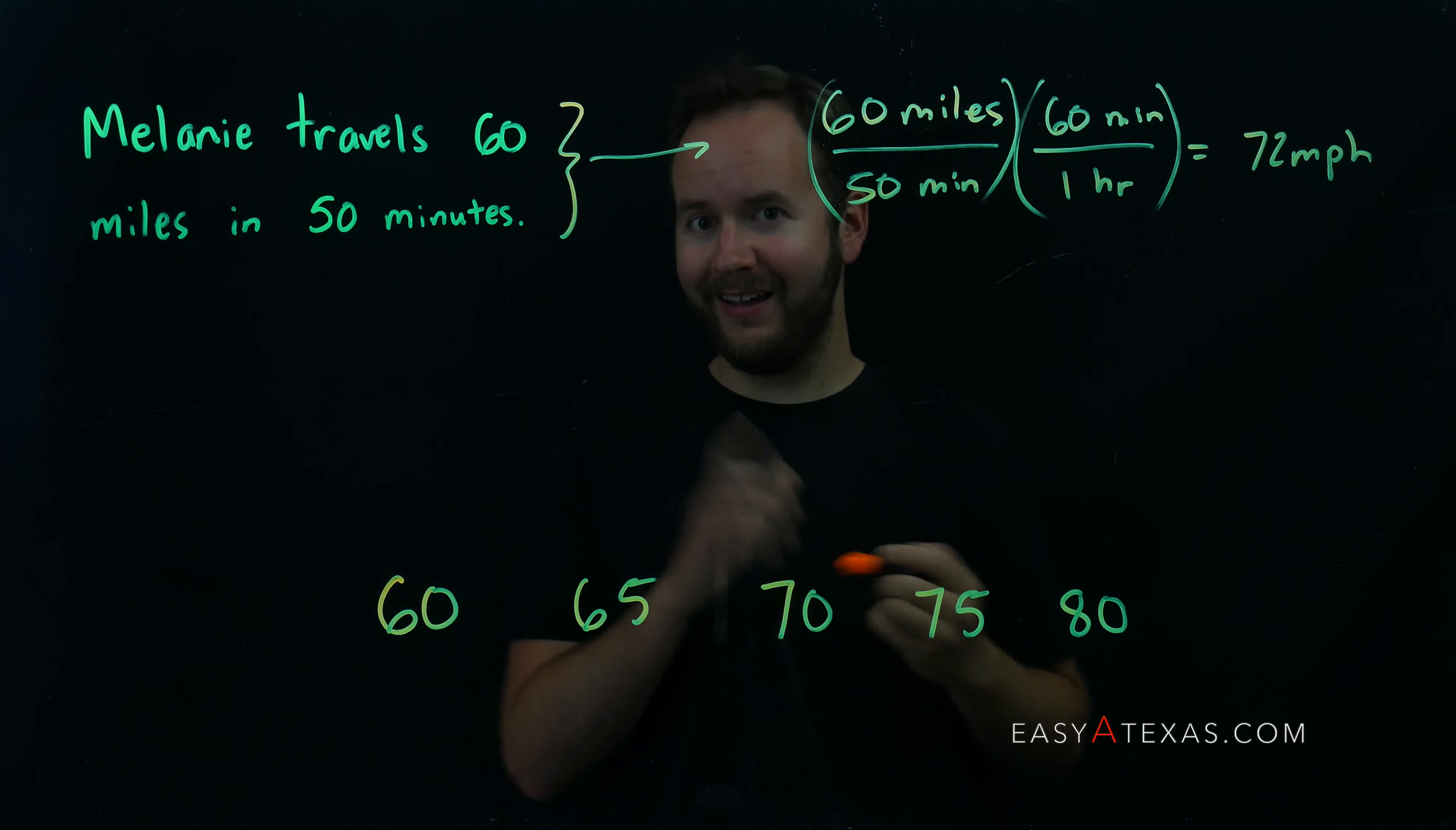And the question is, what's the highest speed limit we can post and still catch her speeding? So with that in mind, if the speed limit were 80, would she be speeding? No, because 72 miles per hour is clearly less than 80.